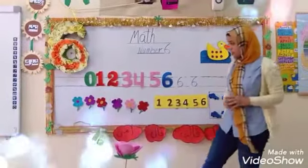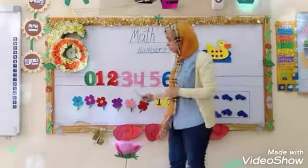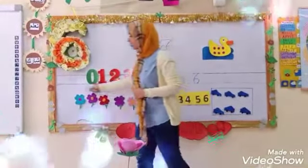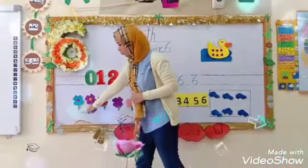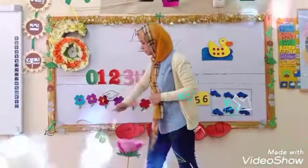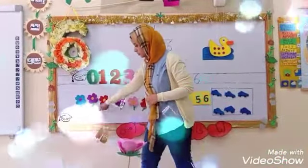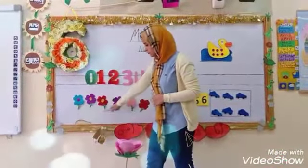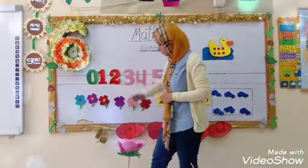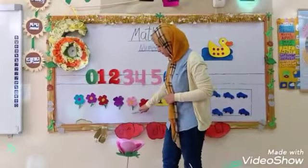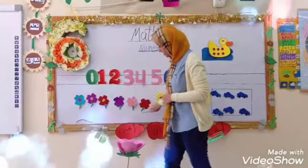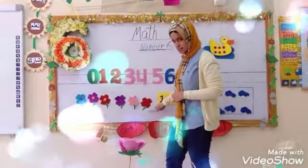Now count with me. How many flowers are here? 1, 2, 3, 4, 5, 6.